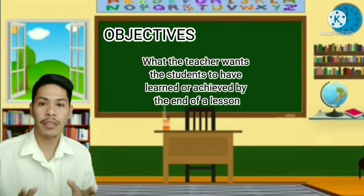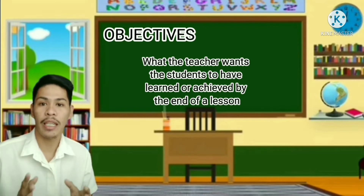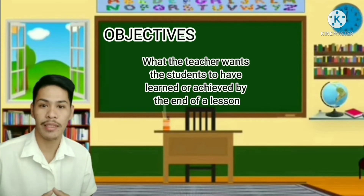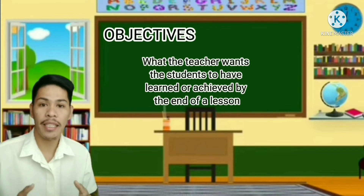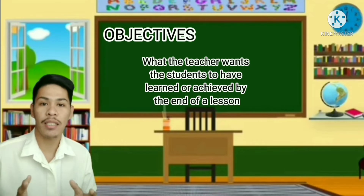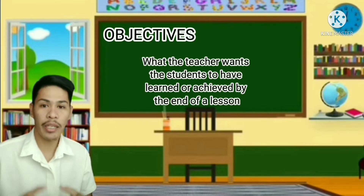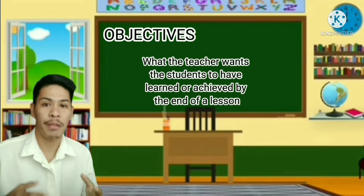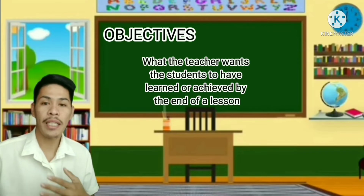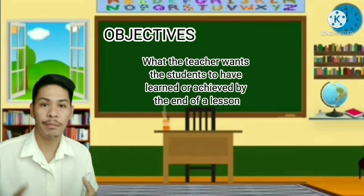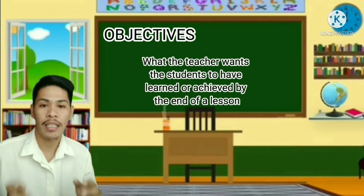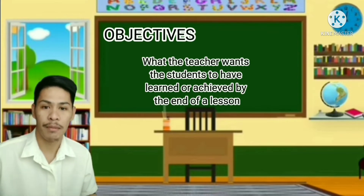A good lesson plan objective describes what students should be able to do after the lesson, not what they don't know. For example, the objective of the current lesson is for the learner to know the six key elements of a good lesson plan. To work this in a way that can be observed and measured, we can say that after this lesson, participants will be able to describe the six key elements. That will be the objective.